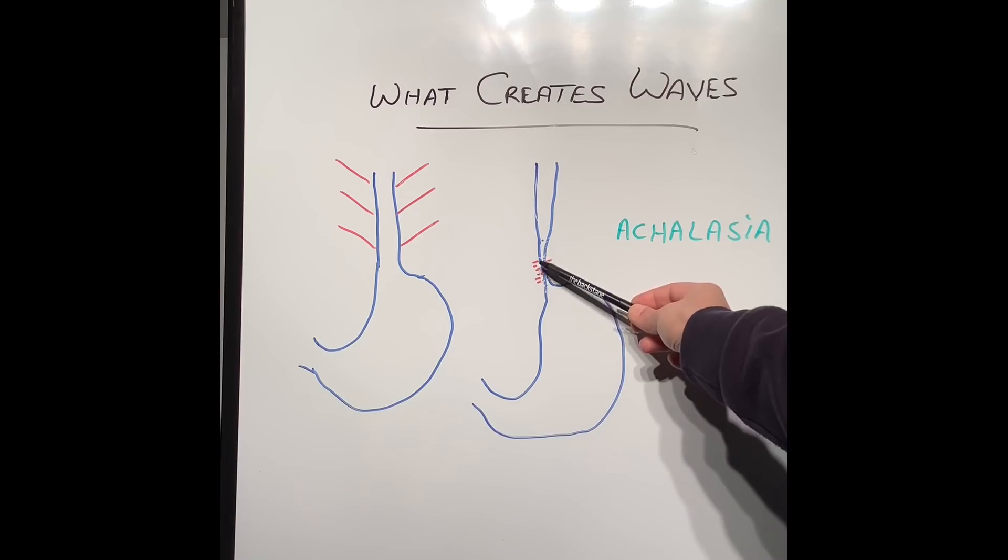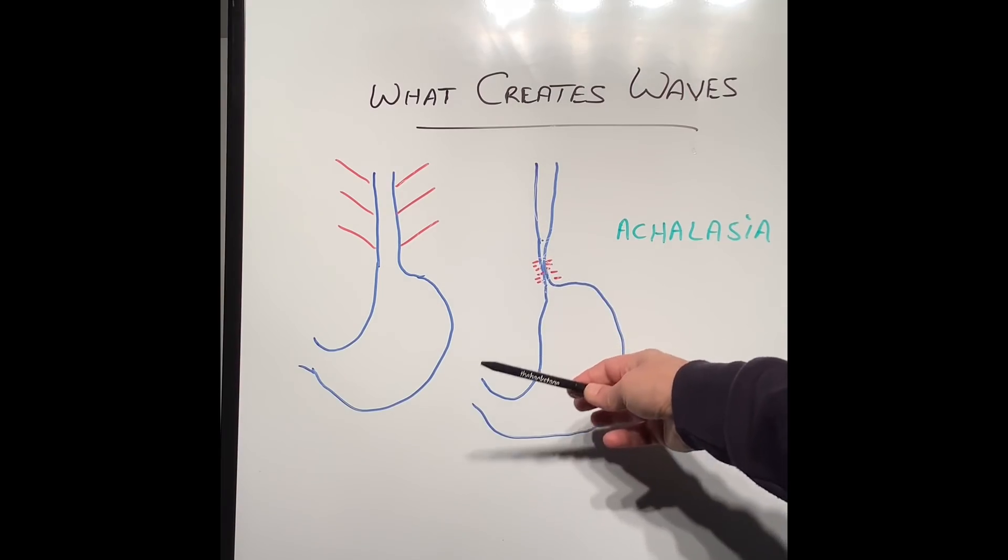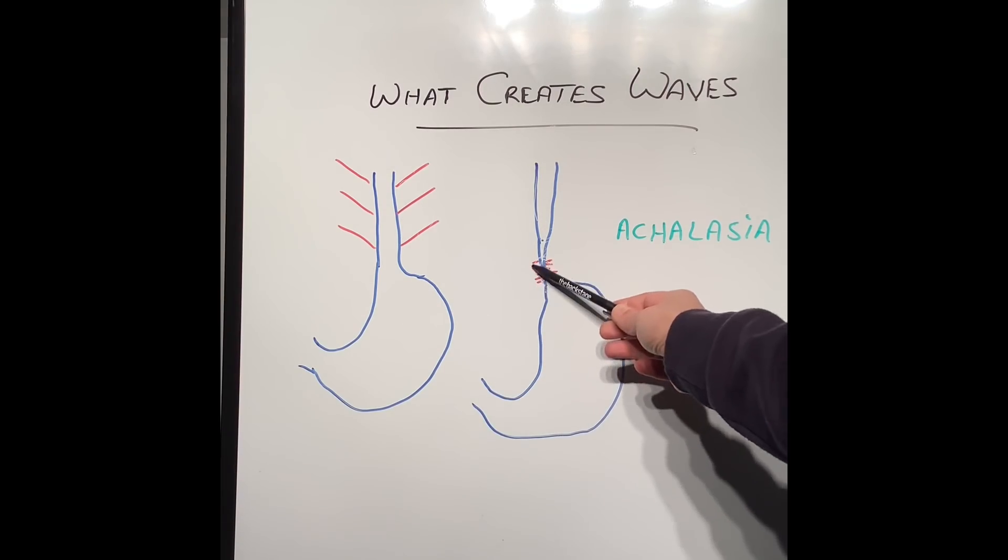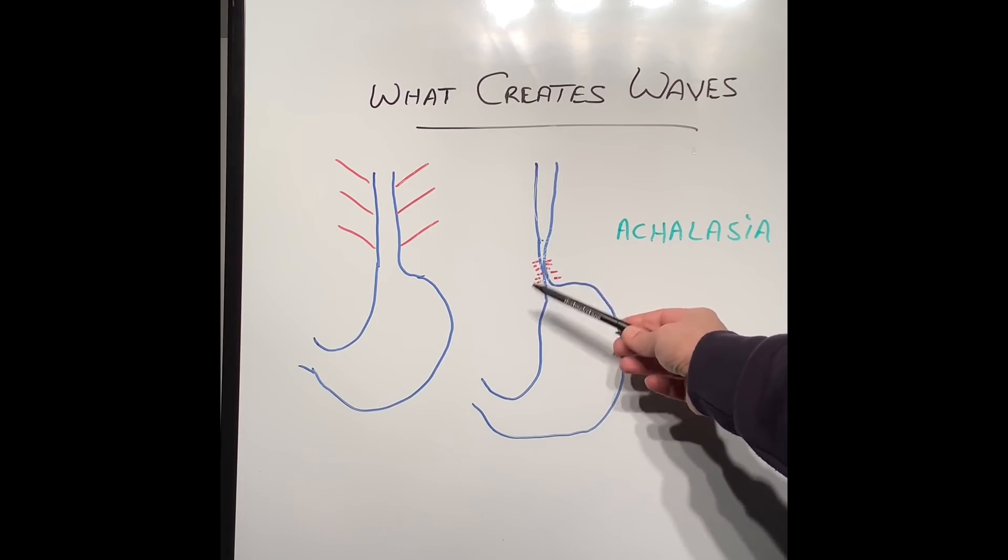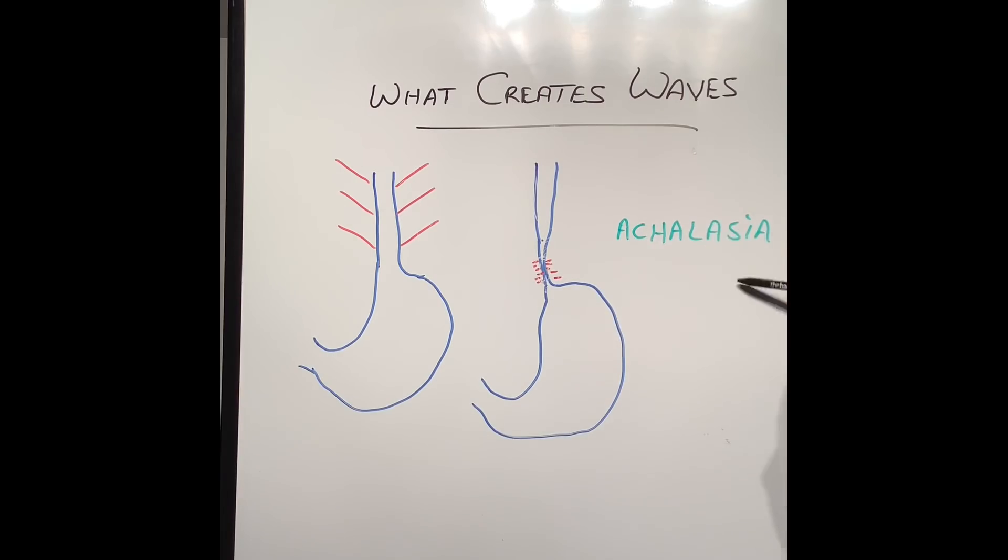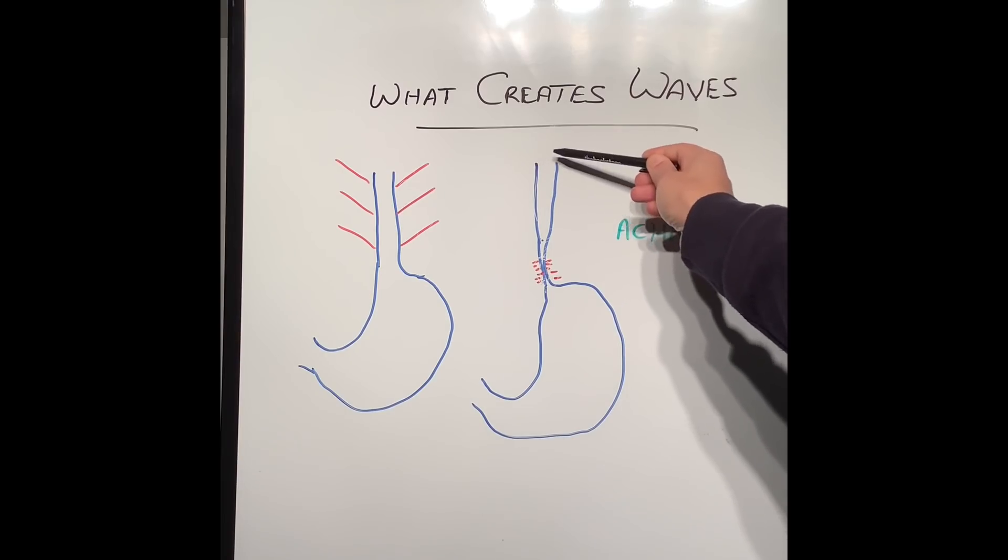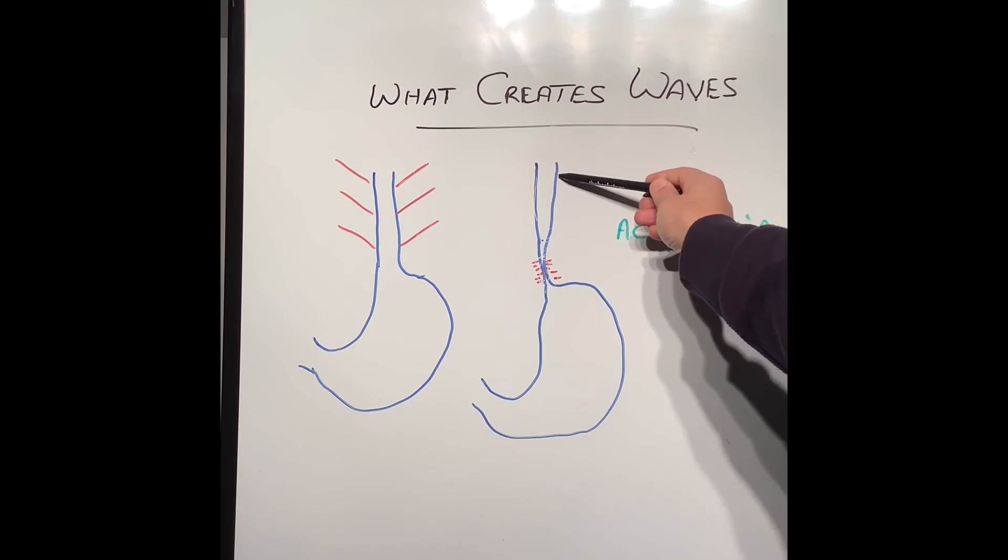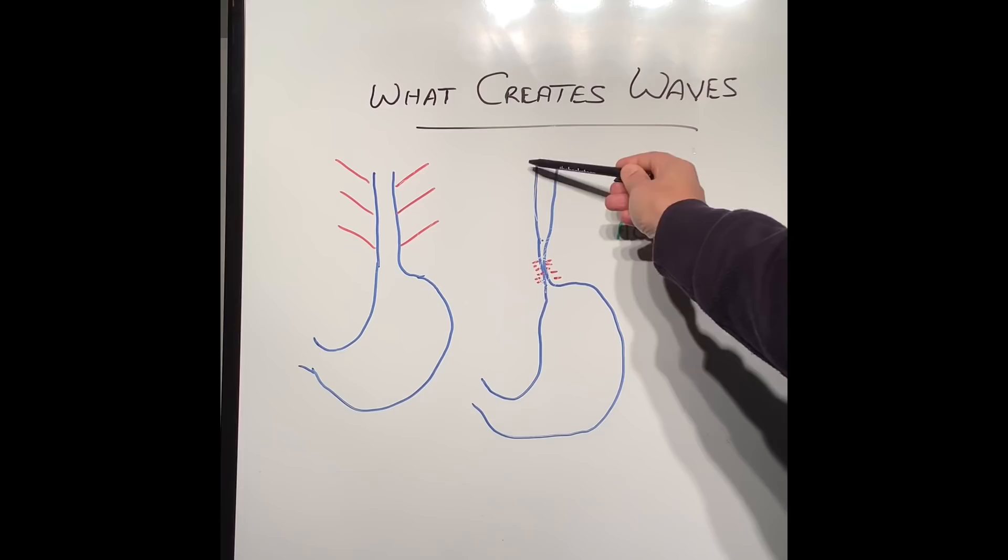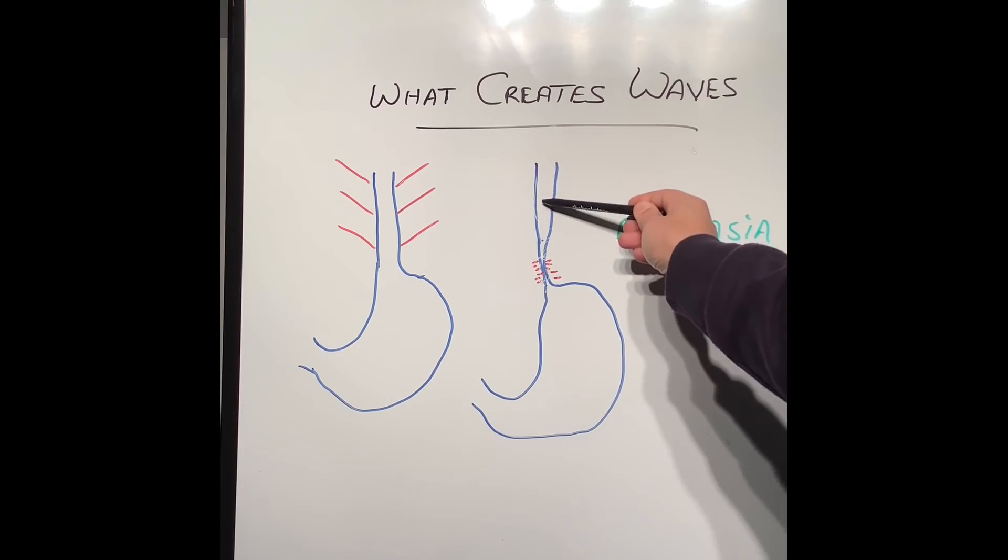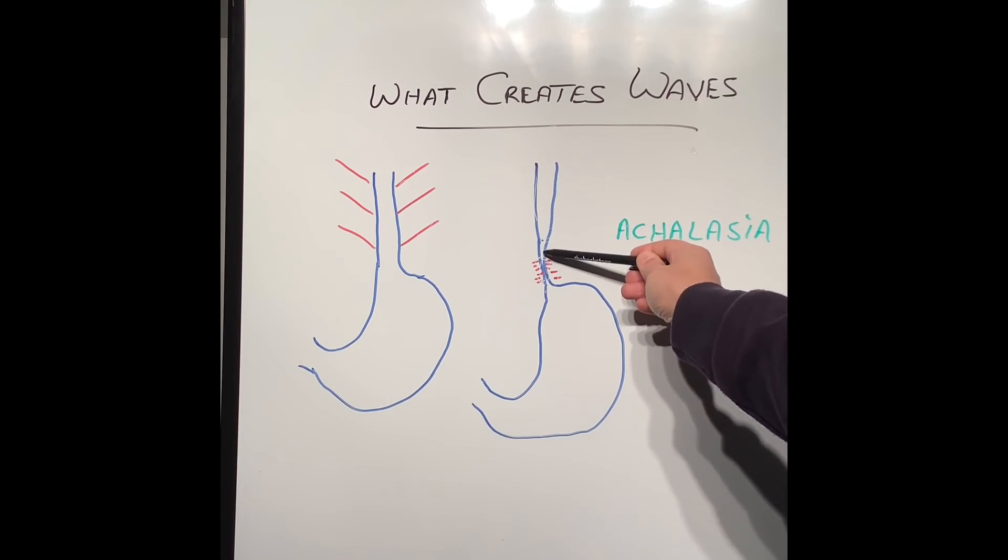Either the patients are not born with those nerve cells in the bottom part of the esophagus, or they get damaged because of infection. This condition is called achalasia. What's happening here is when we eat or drink, the food comes down, and this bit of the esophagus is normal, so it's creating the waves and the food keeps getting pushed down.